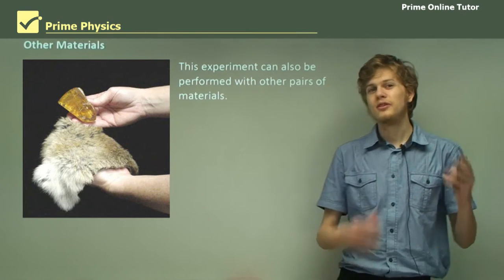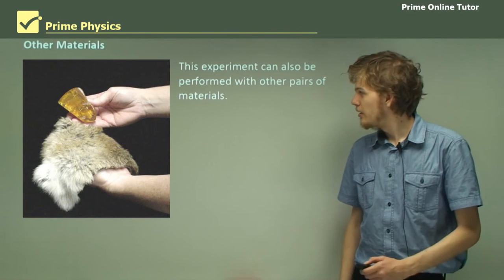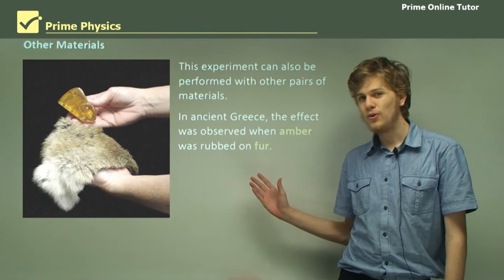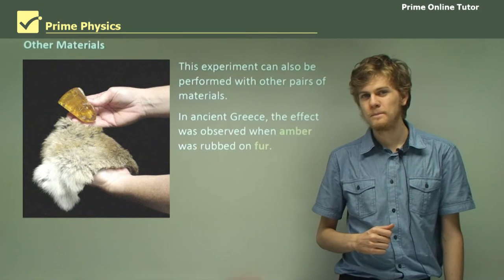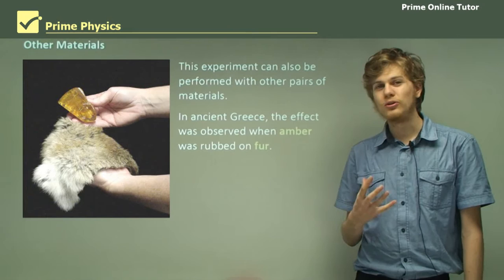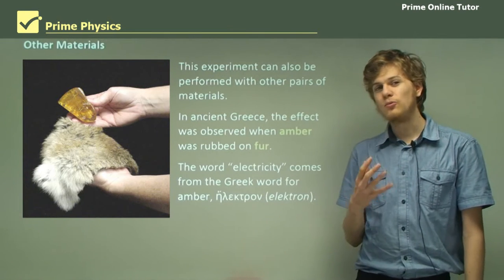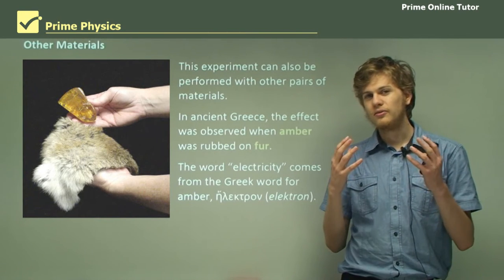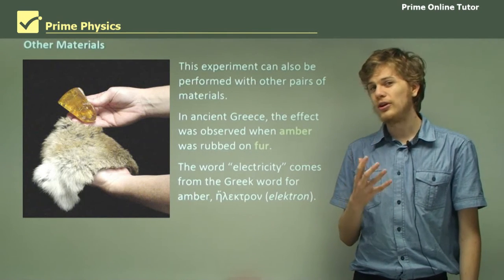We don't have to use glass and silk — we can do this with a number of different materials. One of the earliest examples was rubbing amber on fur. We can see a photograph of a piece of amber and a piece of fur over here. It turns out that amber is where we get the word electricity — it comes from the Greek word for amber, which is electron. So amber is the reason that we have the word electricity.